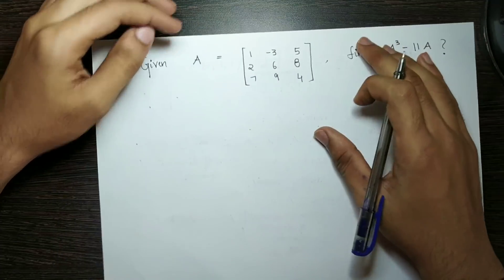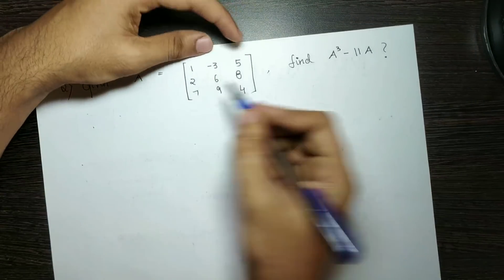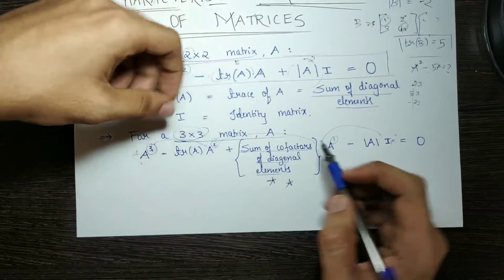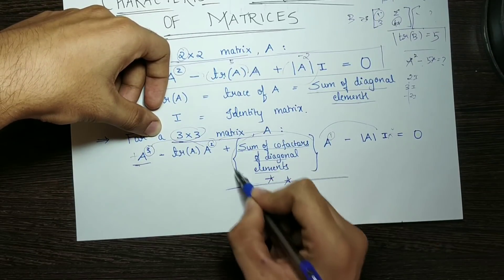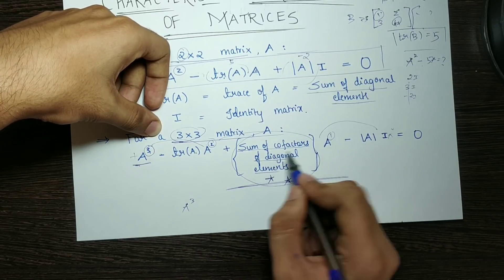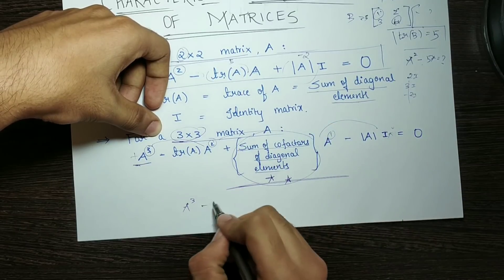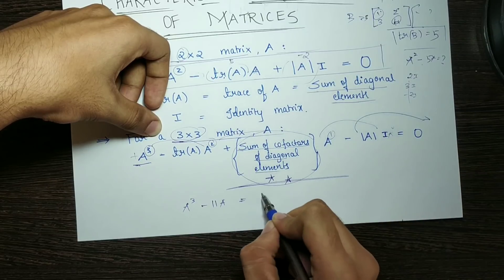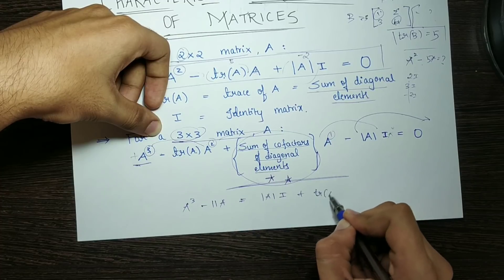Let me explain the answer. Given a matrix, find A cubed minus 11A. So A cubed minus 11A plus the next term — the e-term coefficient is already 11. The characteristic equation gives us: A cubed, minus trace of A into A squared, plus sum of cofactors of diagonal elements into A, minus determinant of A into I equals 0.